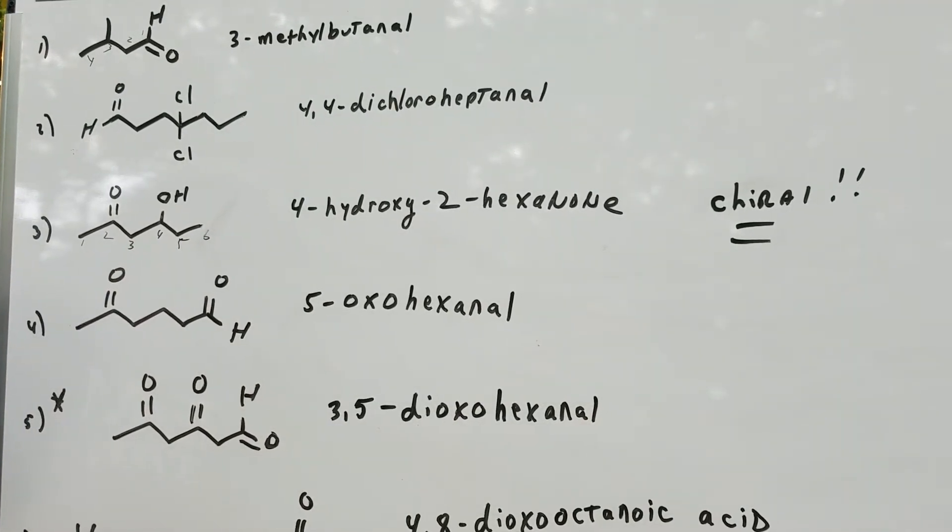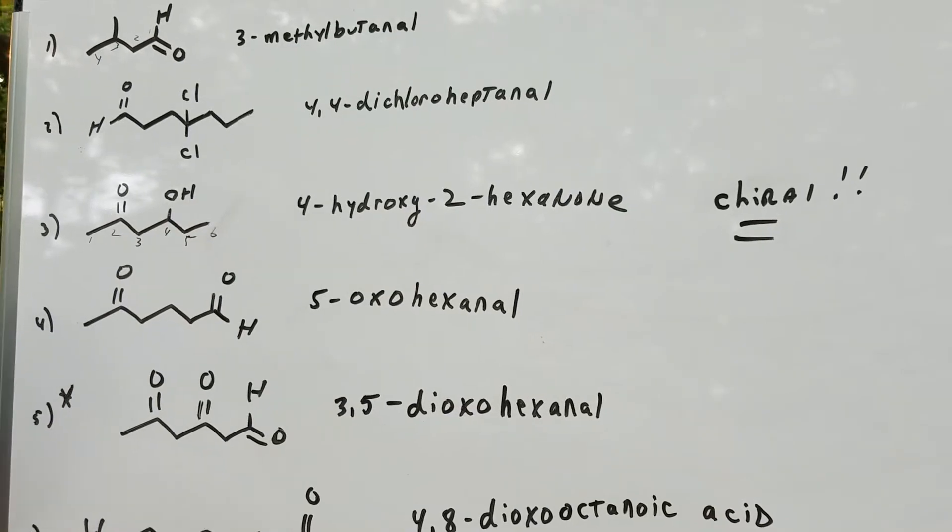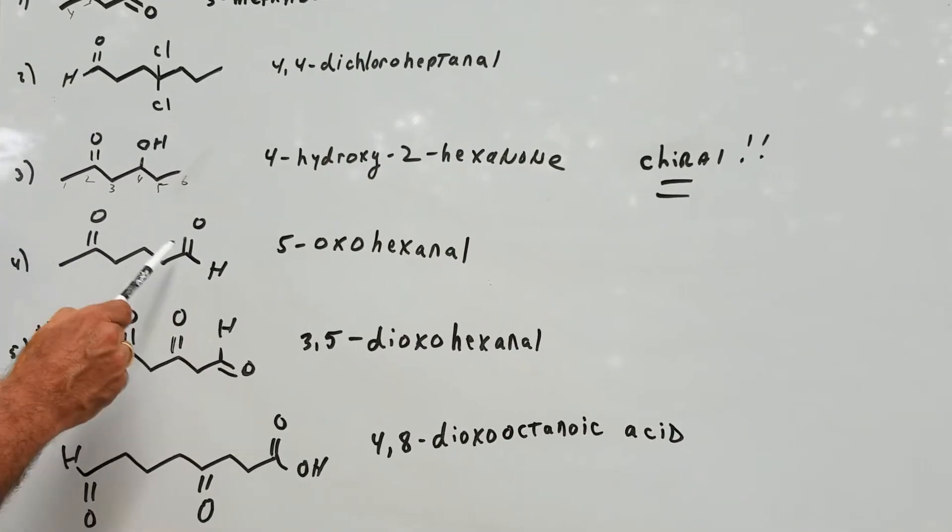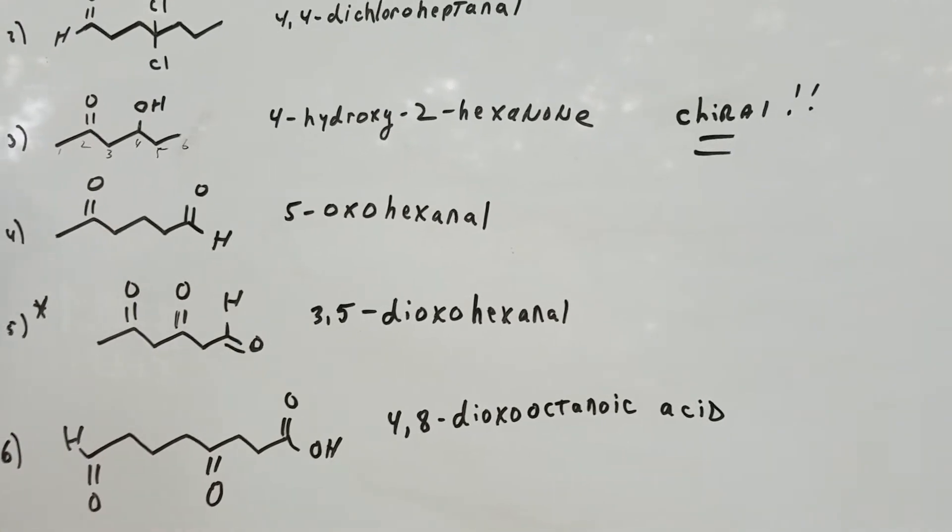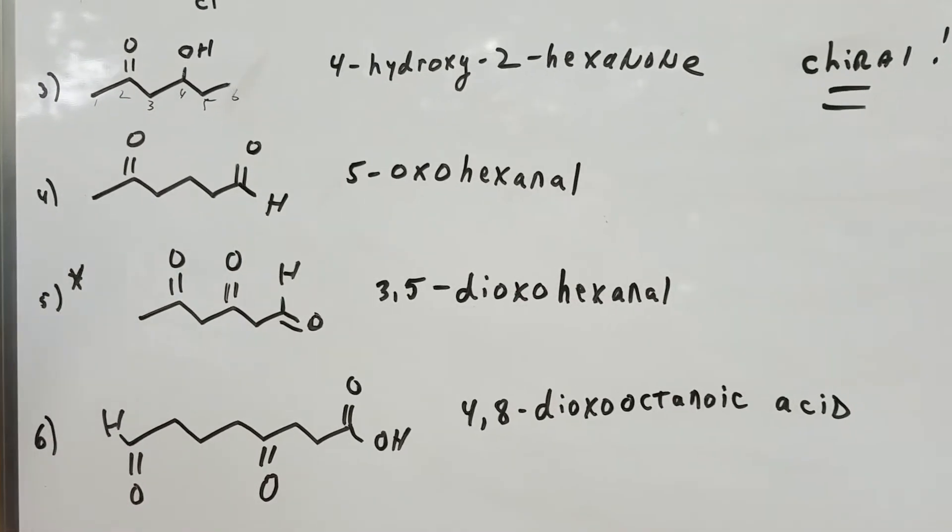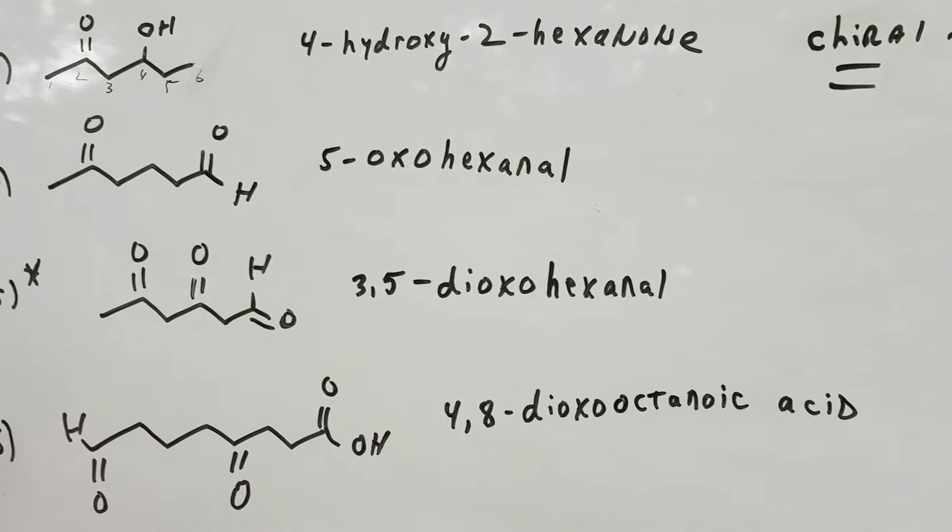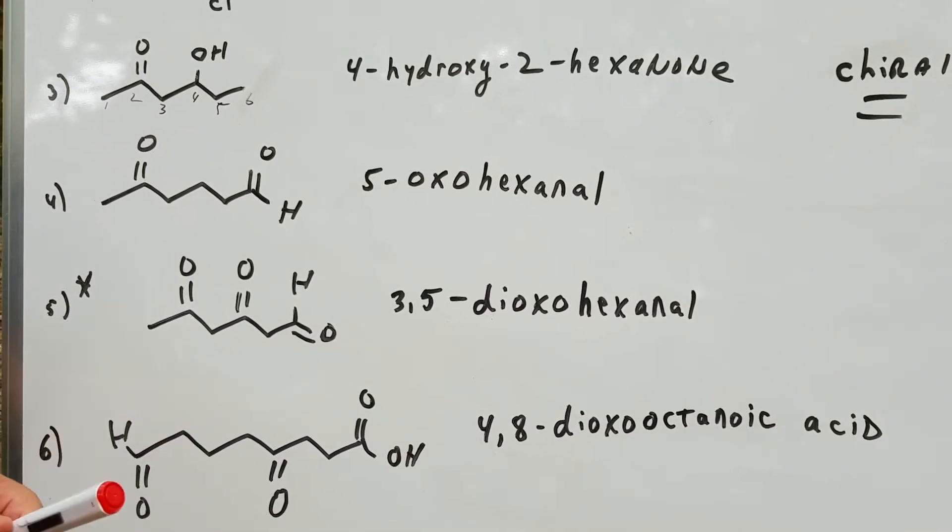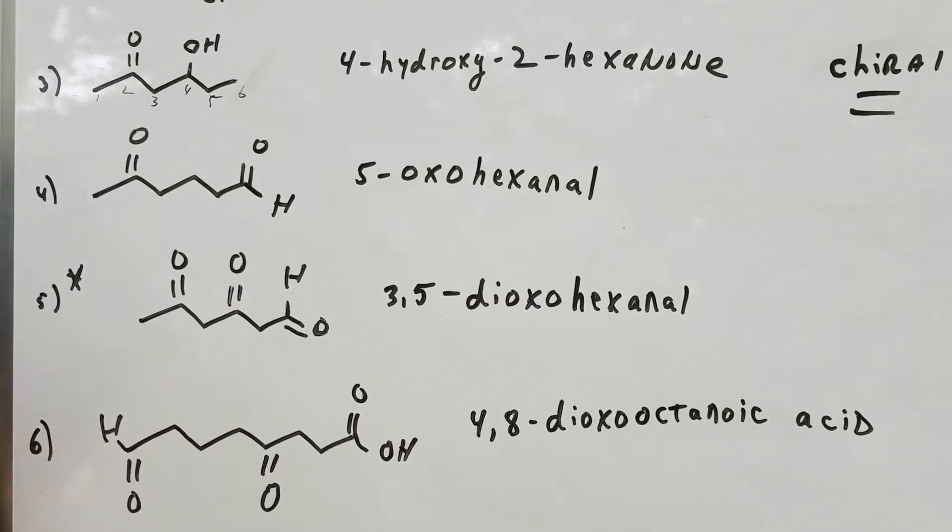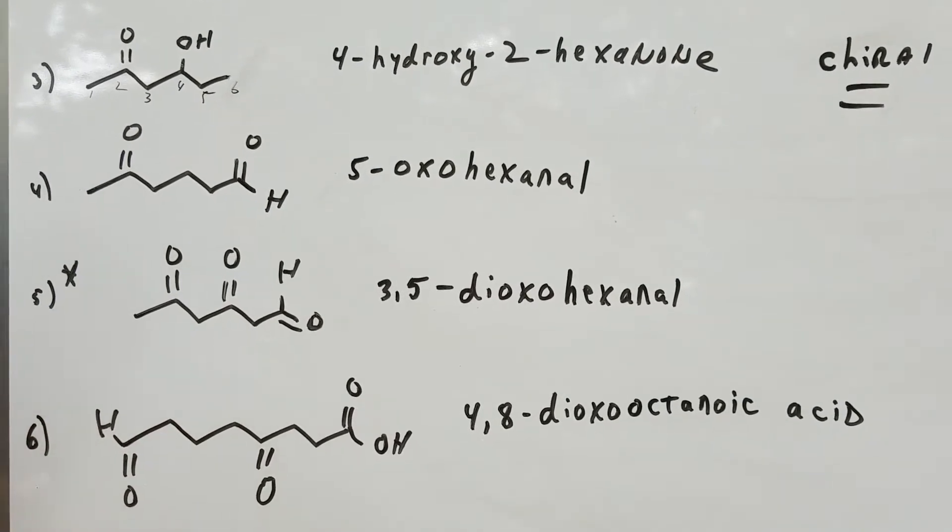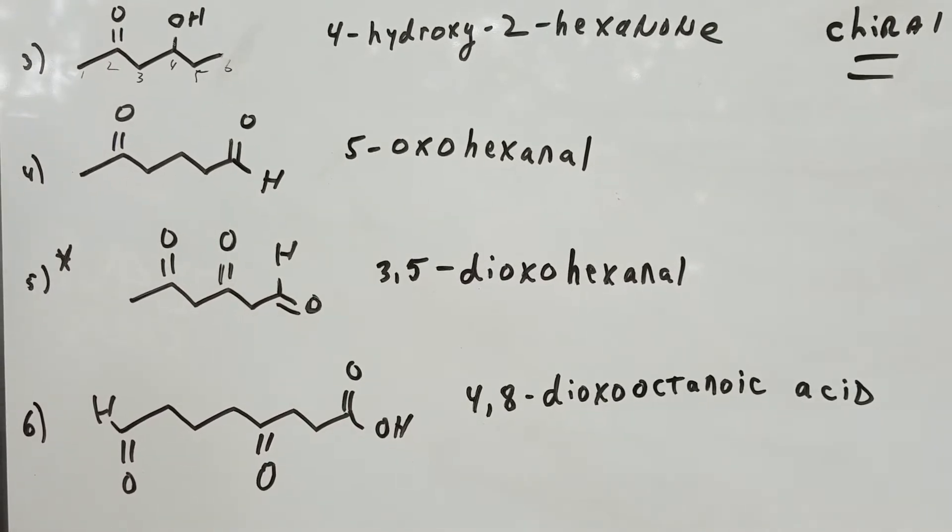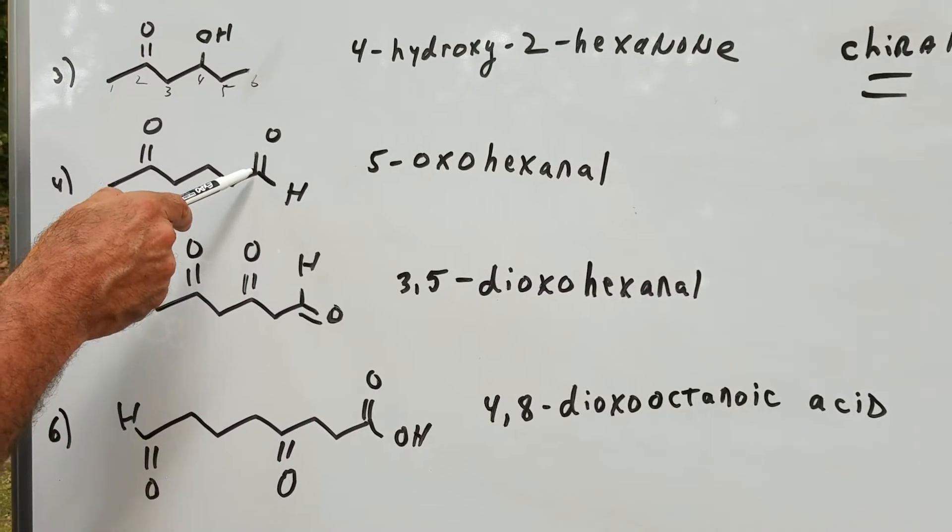So therefore, aldehydes you don't need a number to locate the carbonyl group, ketones you do. So once again you would get 4-hydroxy-2-hexanone. Now here's where it becomes a little challenging: what if there's an aldehyde and a ketone group, who's got the priority? The answer is the aldehyde. The aldehyde gets the priority.